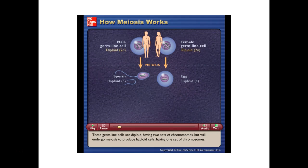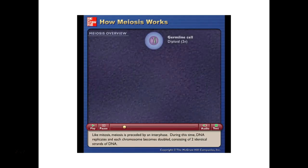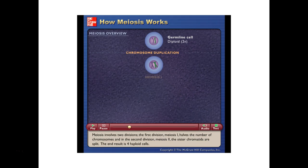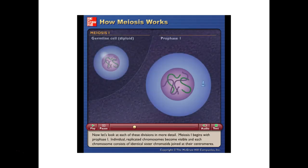Meiosis produces sperm cells and egg cells, found in the testes and ovaries respectively. These germline cells are diploid but undergo meiosis to produce haploid cells. During fertilization, haploid cells fuse to form a diploid offspring. DNA replicates during interphase before meiosis begins, and each chromosome becomes doubled, consisting of two identical strands. Meiosis involves two divisions: meiosis 1 halves the chromosome number, and meiosis 2 splits the sister chromatids, resulting in four haploid cells.